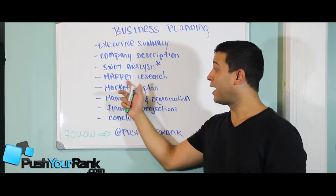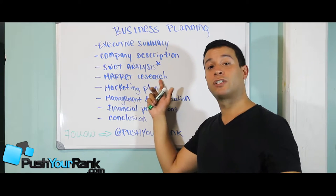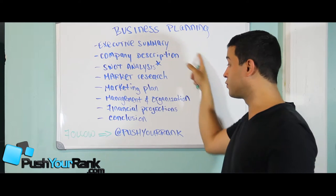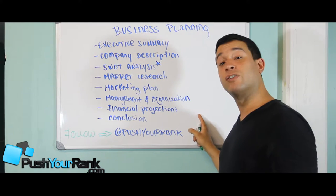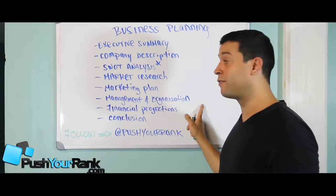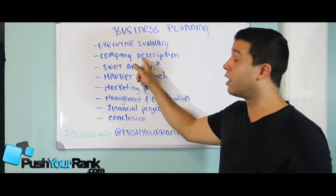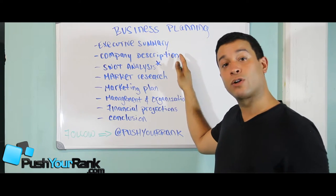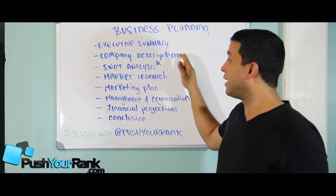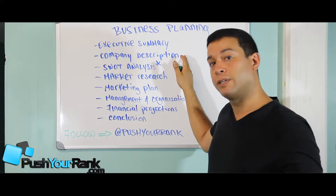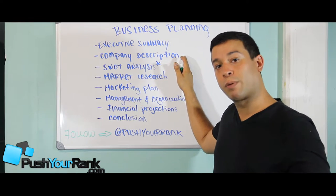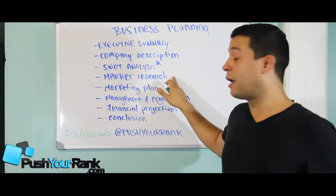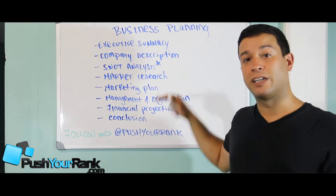We are now on the market research section of the business plan. We've already covered the executive summary — the first video covers everything, so we have a paragraph of everything. We covered the company description, which has the products, the services, our hours, and what kind of entity we are — whether we are incorporated, sole proprietor, or partnership. We did the SWOT analysis, which is optional. Now we're on the market research, so let's get to it.